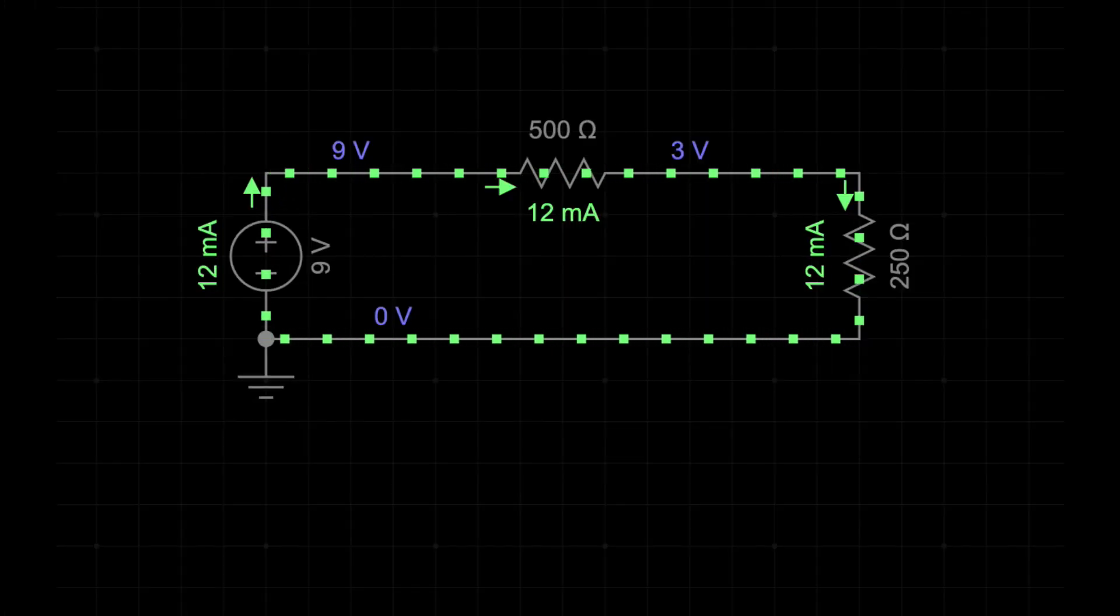As shown in this circuit diagram, the current flowing through the circuit is 12 milliamps. Let's check if we can verify the numbers with a multimeter.